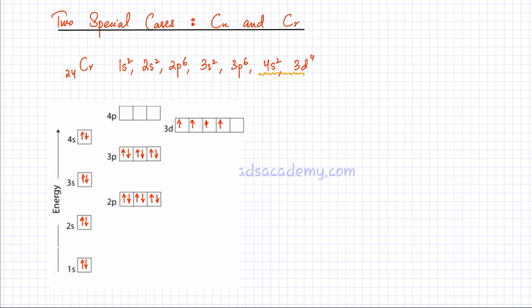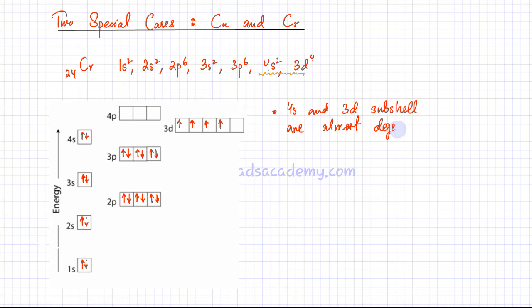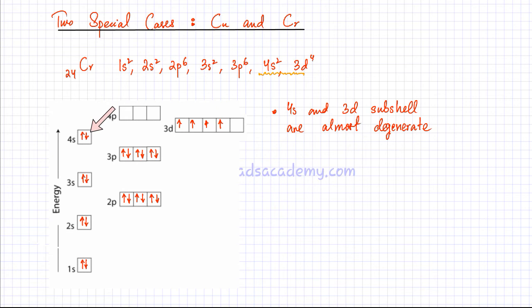One thing that you would notice is that the 4s and the 3d have very little difference in their energy levels. You can state that the 4s and the 3d subshells are almost degenerate — they almost have exactly the same energy level. Looking at the energy diagram, there is a very slight difference between the 4s and the 3d. Since the 4s has 2 paired electrons, there is going to be more repulsion.